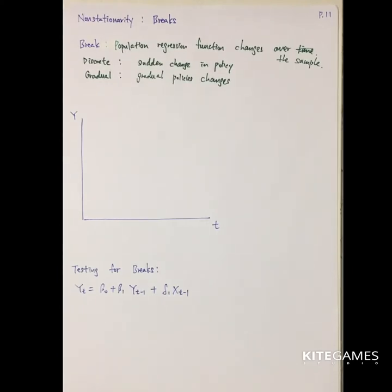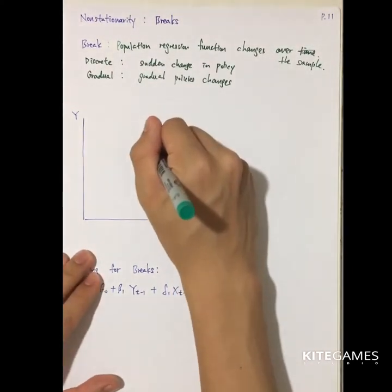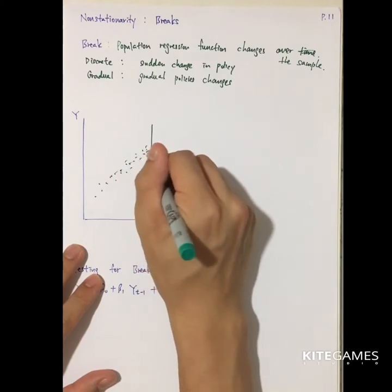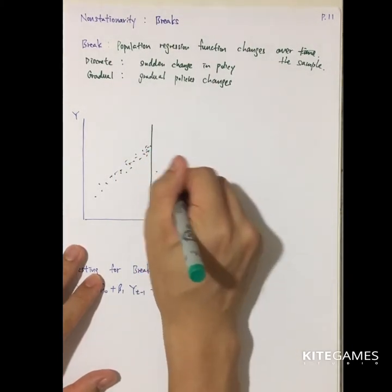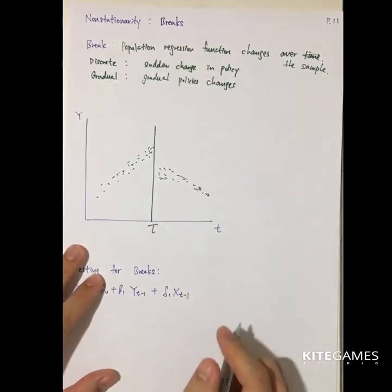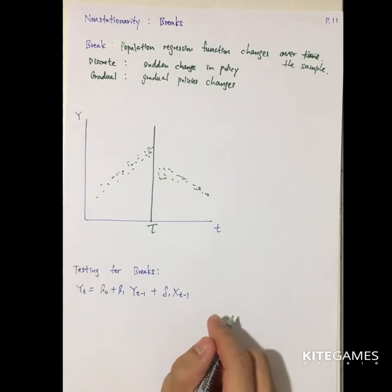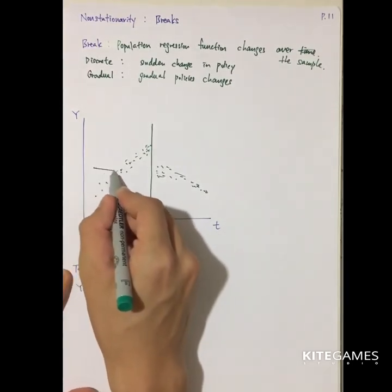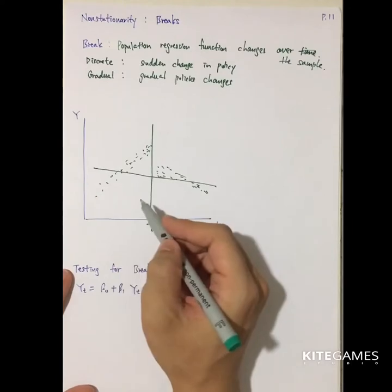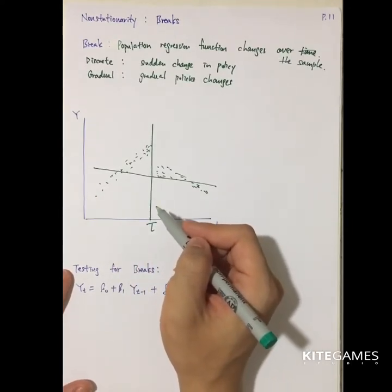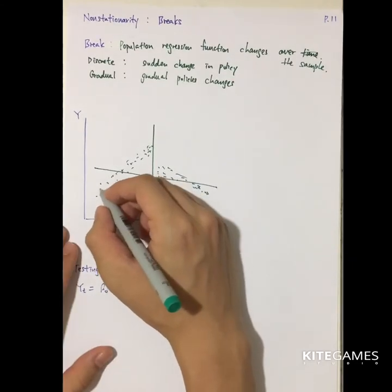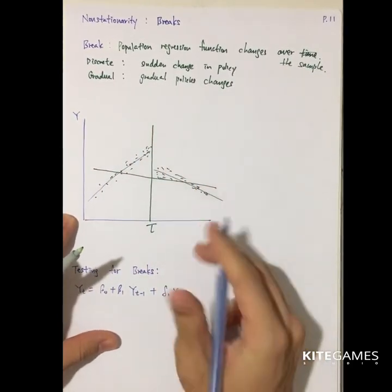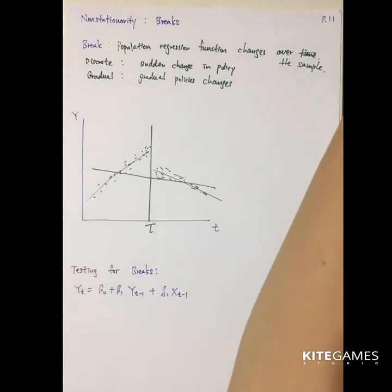To illustrate a structural break diagrammatically, at some time equal to tau, originally there may be a positive relation of Y with time, then suddenly it may become negative. If you use OLS without separating the break and run the regression, you may find some flat or misleading relation. A better representation should have something increasing in the first part and something decreasing in the second part. So you should separate the regression into two cases if there is a break.